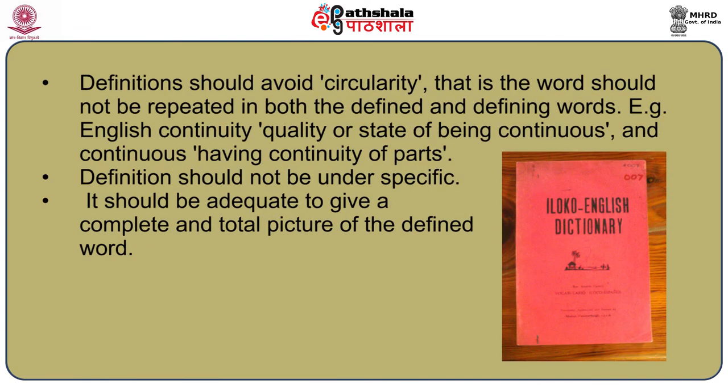The process of defining — the meta-language — should be very simple. Difficult and uncommon words should be avoided as far as possible. In the Internalized Reader's Dictionary of English, a word list of 24,000 words is defined with a single vocabulary of 1,490 words. The definition should also avoid circularity — that is, words should not be repeated in both the defined and defining parts. For example, 'continuity' meaning 'quality or state of being continuous' and 'continuous' meaning 'having continuity of parts' is an example of circularity.